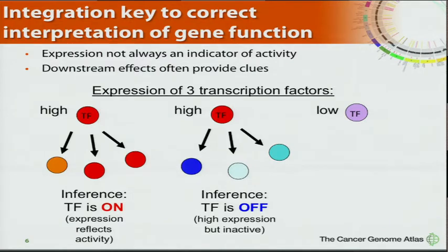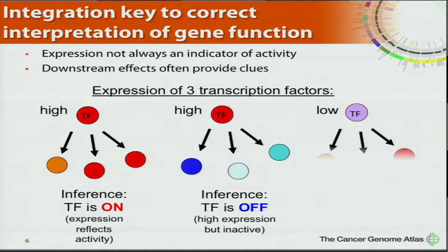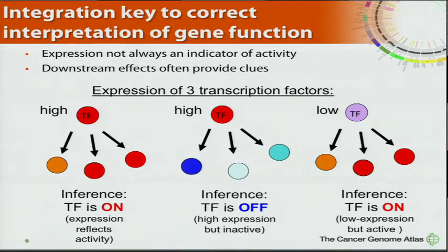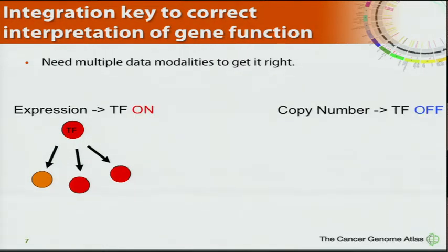In another case, you might see that the targets aren't doing anything downstream of the factor, and you'd think it's off — either post-transcriptionally or translationally the protein wasn't activated, or it's not localizing correctly, or there's a mutation blocking its function, or its co-activators aren't around. Conversely, you could have a low level of expression of a factor and yet it's still enough to have potent transcriptional activity. So you want to look around the neighborhood to figure out what's going on.